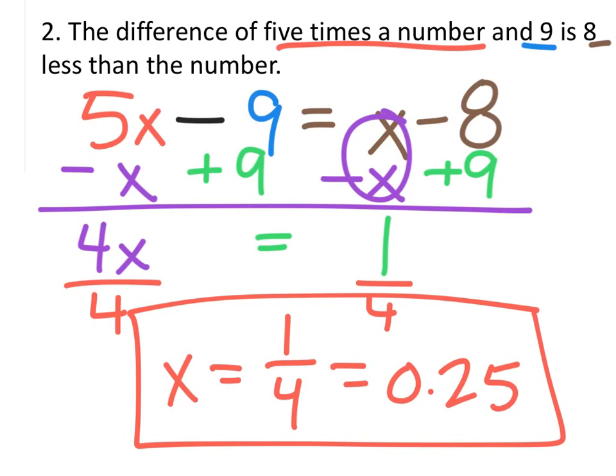Now you could double-check this. Again, you would just use the words, the difference of 5 times the number. So 5 times 0.25 minus the 9. What would that give you? And then you'd do the same thing here. 8 less than 0.25 would give you some value. It looks like it would be a negative 7.75. All right, and that's the way you would check that.